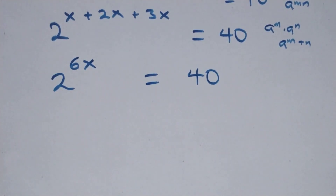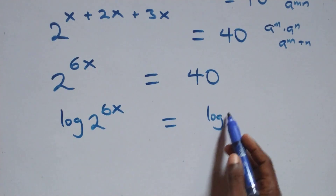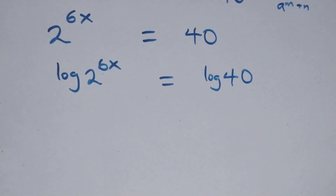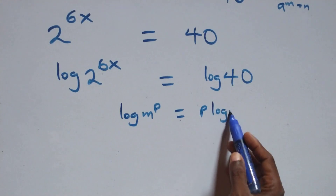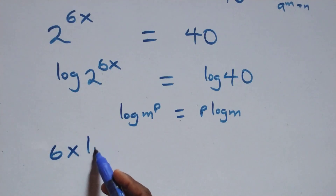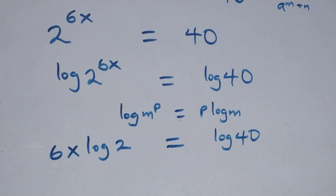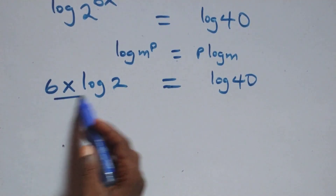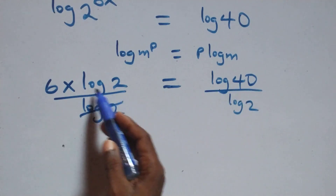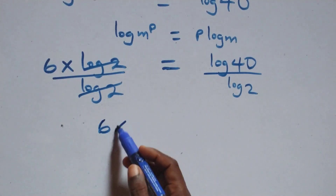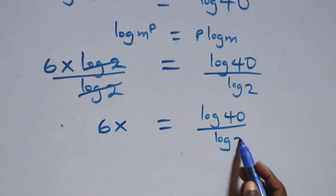Next, we take the log on both sides. We have log of 2 raised to power 6x equals log 40. Applying the power rule of logarithms, this gives 6x times log 2 equals log 40. We then divide both sides by log 2, and log 2 cancels, giving us 6x equals log 40 over log 2.